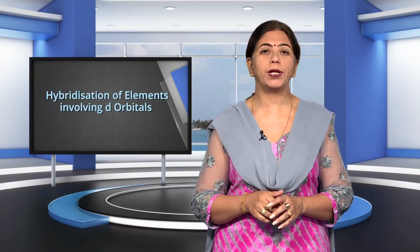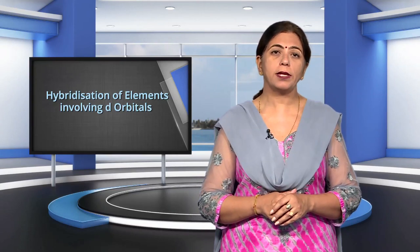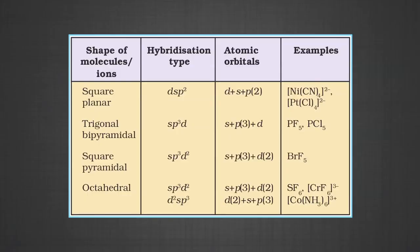Hybridization of elements involving D orbitals: elements present in the third period contain D orbitals in addition to S and P orbitals. The energy of the 3D orbitals is comparable to the energy of 3S and 3P orbitals, and also comparable to 4S and 4P orbitals. As a consequence, hybridization involving either 3S, 3P, and 3D, or 3D, 4S, and 4P is possible. However, since the difference in energies of 3P and 4S orbitals is significant, no hybridization involving 3P and 4S orbitals is possible.